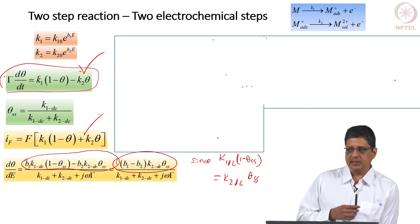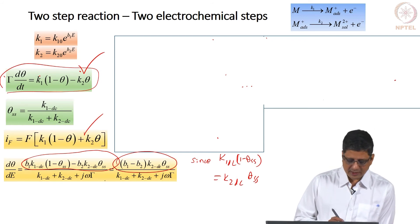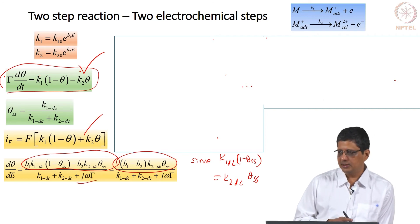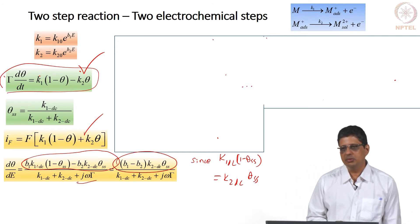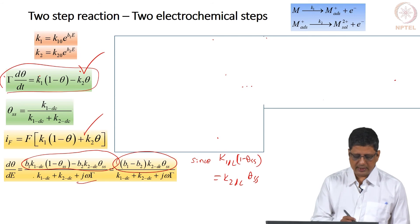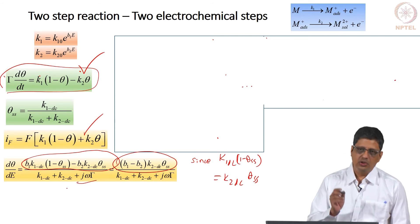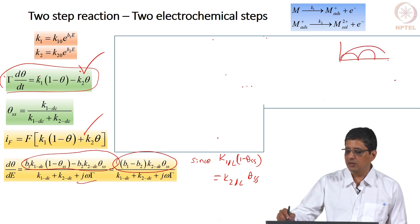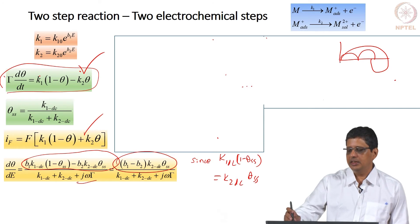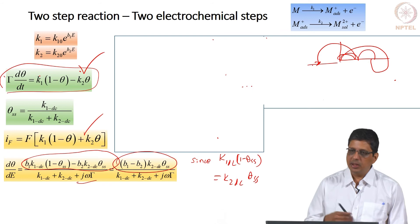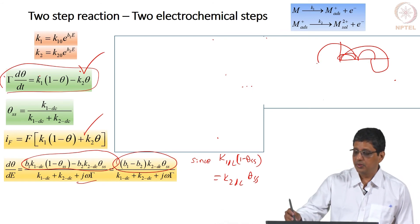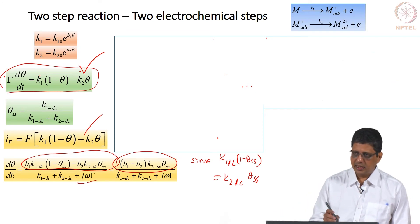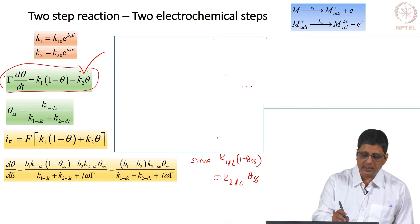When omega tends to infinity, d(theta)/dE goes to 0. When omega is 0, d(theta)/dE is a fixed number (depending on parameters). So at very low frequency it looks like a resistor — that is why the impedance always settles on the real axis. At intermediate frequencies d(theta)/dE varies with omega, and the expression tells us how. At any frequency other than 0 or infinity, the impedance is not going to be a constant.